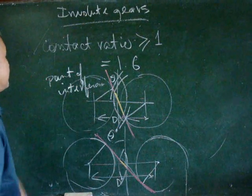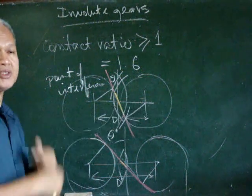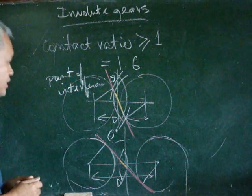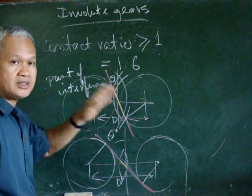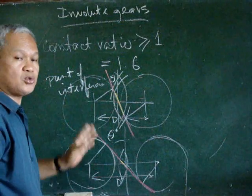So for involute gears, we can move them closer, but there should be no interference. We can move them away from each other, but the contact ratio must be greater than or equal to one.